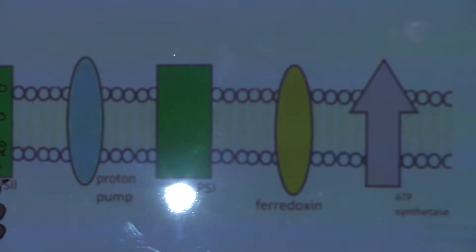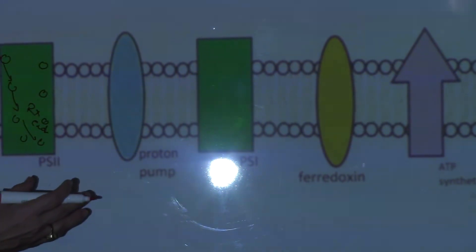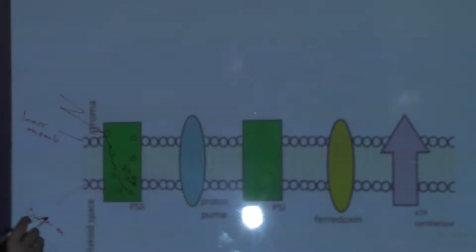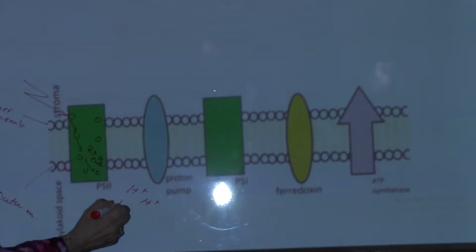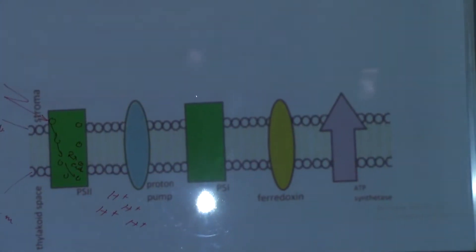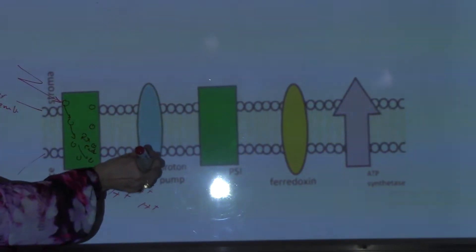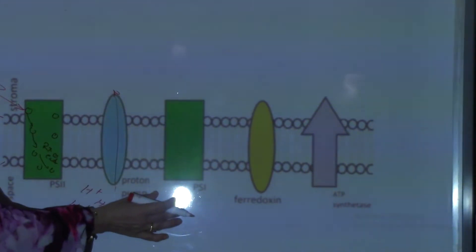The electrons are fed to a group of electron carriers, generating a proton gradient. The proton gradient builds up here. When the electrons pass through the electron transport chain, the electron pump pumps the electrons in this direction. And here is photosystem I.